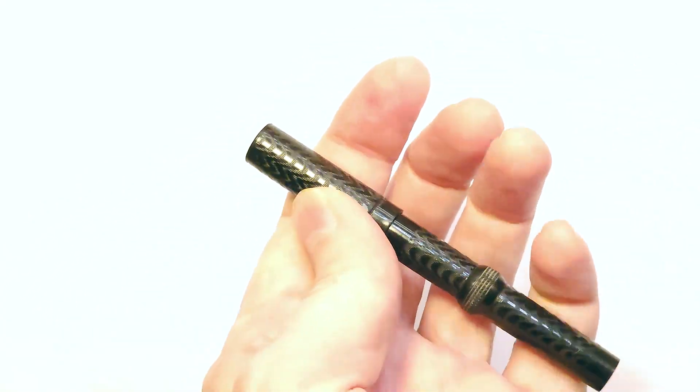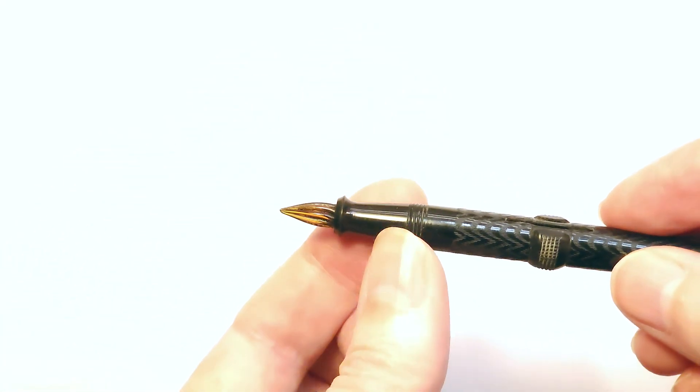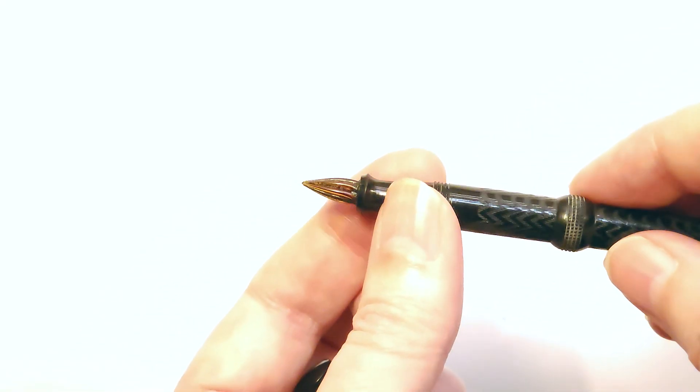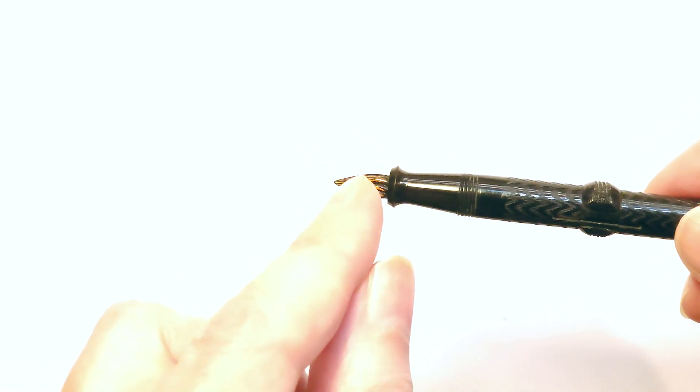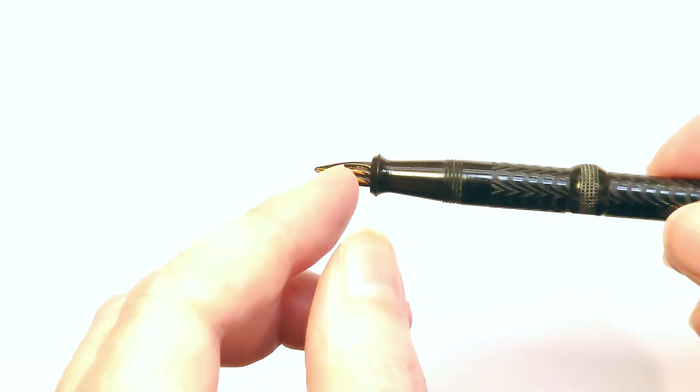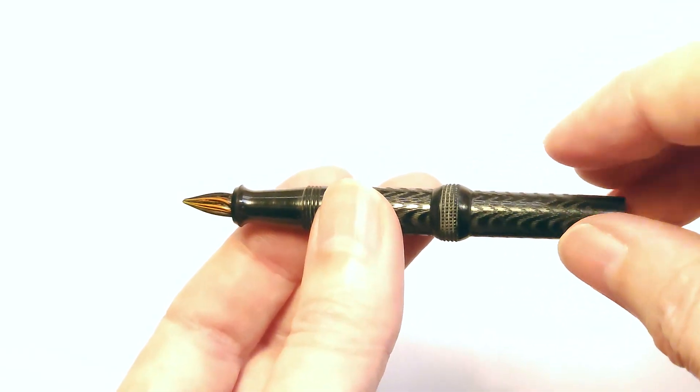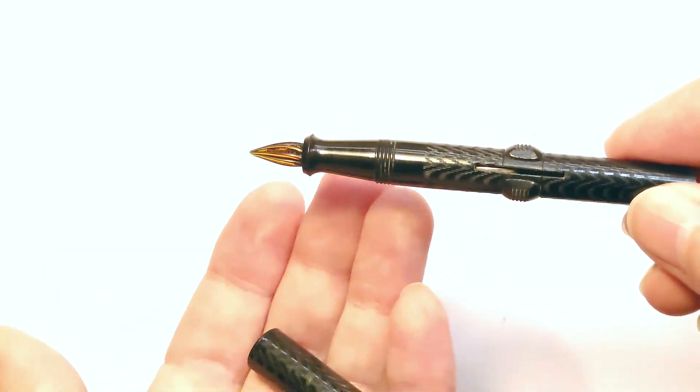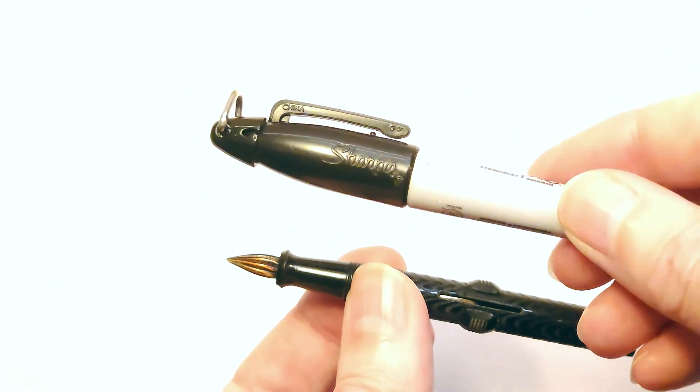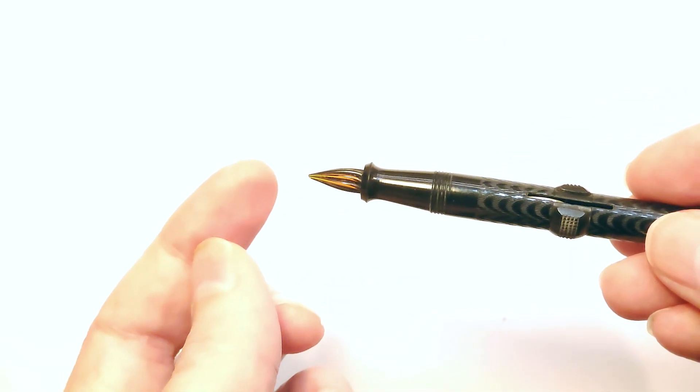And these glass nib pens, they would typically write a fairly broad line. They were not very fine tipped. And you didn't have the level of ink control that a regular fountain pen would have. So it would tend to deliver a lot of ink. And so the kind of line that you would get for writing with a pen like this would be very similar to what you get with a modern felt tip marker or Sharpie. It would be a broad line, a deep line, a lot of ink.